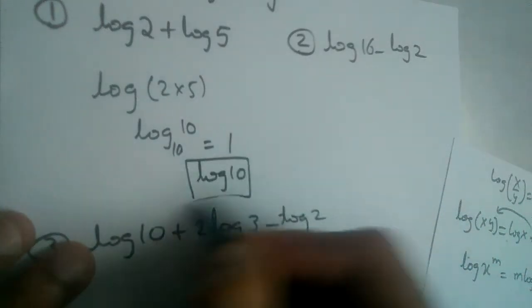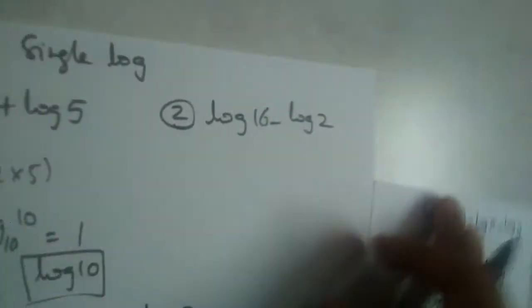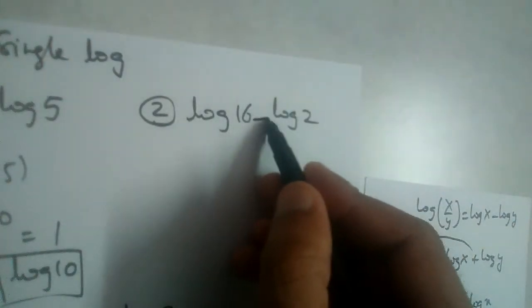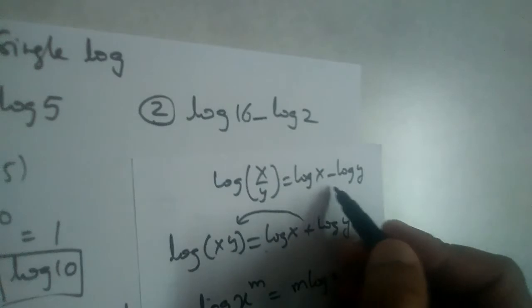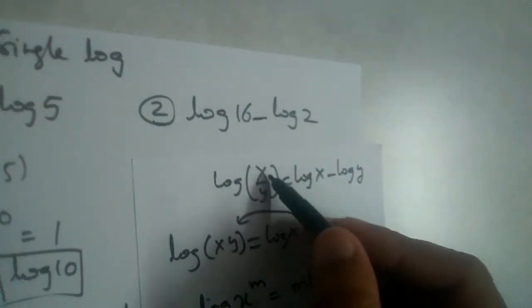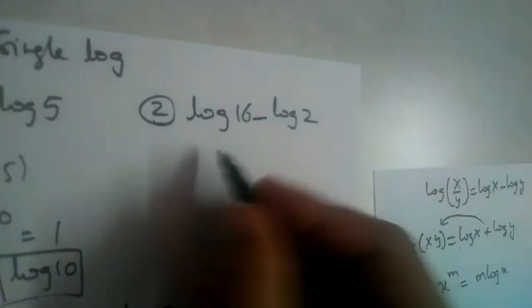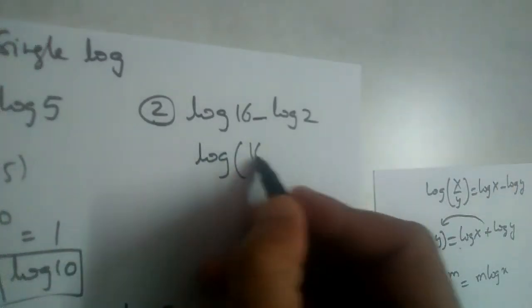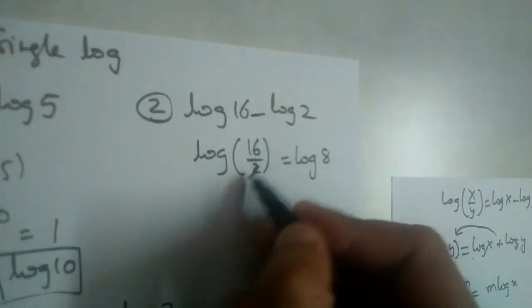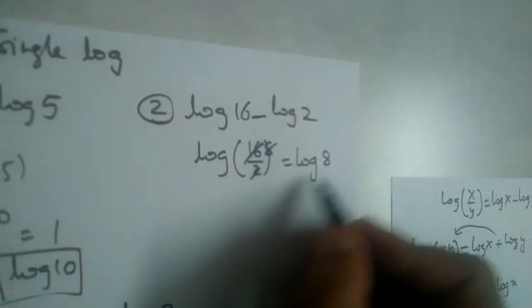So log 16 minus log 2 is next. We have a minus sign. Minus will come for what? Division. Log x minus log y is log x by y. So this is log 16 divided by 2, which is equal to log 8.